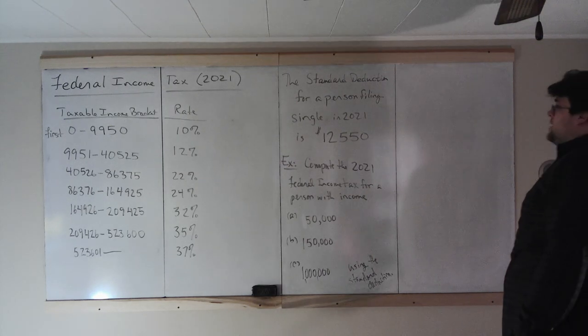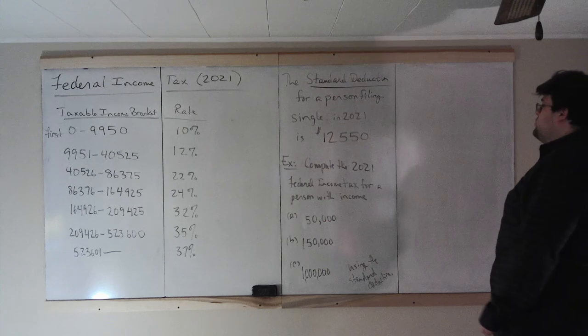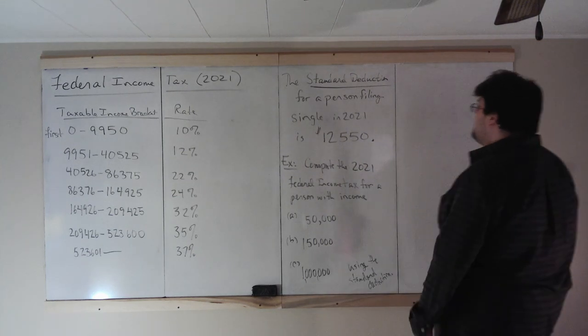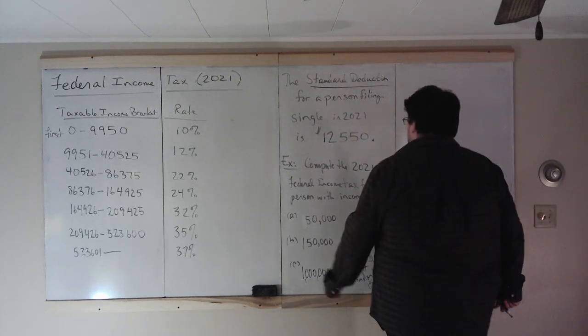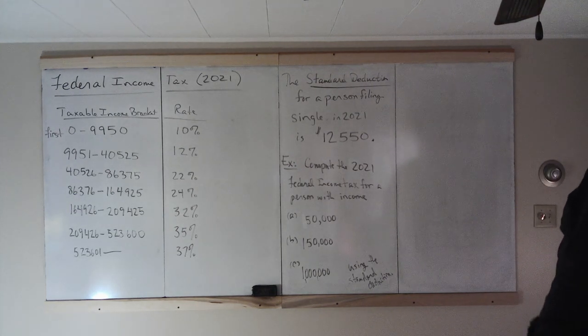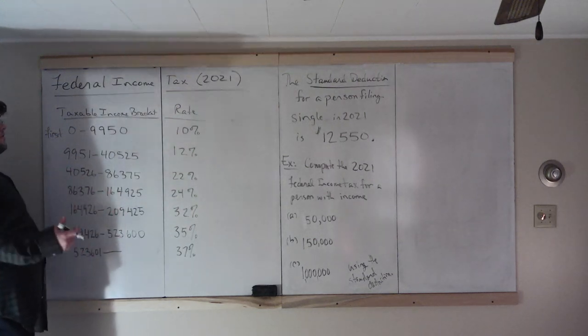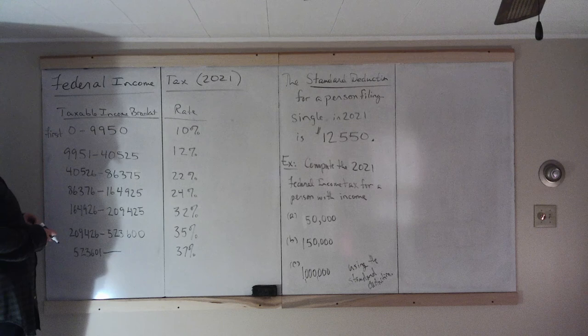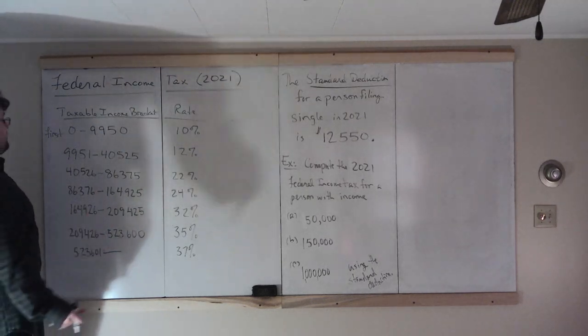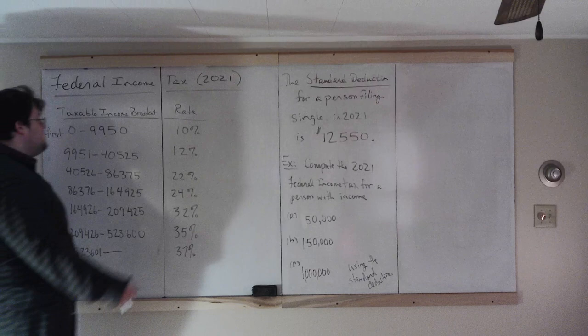One other thing to keep in mind is something called the standard deduction. So if you're a person who files single in the year 2021, for your federal income tax purposes, you get to use what's known as the standard deduction. In 2021, for a person filing single, the standard deduction is $12,550. And what that means is that whatever your income is, you can reduce that by $12,550 automatically, which is why we call this taxable income bracket rather than income bracket, because your taxable income isn't going to be equal to your income. If you make $35,000, one deduction you can do is this $12,550. And then your taxable income would then be $22,450.